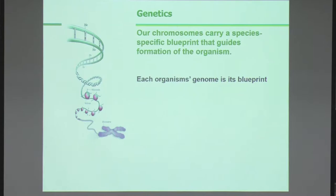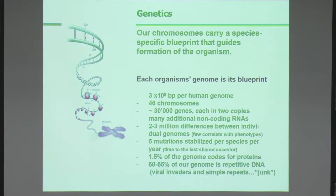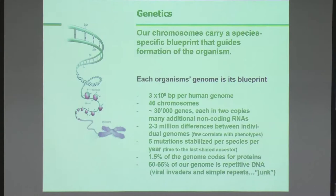To understand epigenetics you have to start with genetics, because 'epi' just means 'on top of' genetics. It doesn't replace the fact that our chromosomes carry a species-specific blueprint that guides the formation of the organism. You have about 3 times 10 to the ninth base pairs, 46 chromosomes, between 25 and 30 thousand genes encoded in that DNA. Between different people there are about two to three million differences in base pairs, but few of those changes correlate with phenotypes.